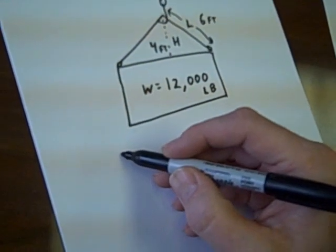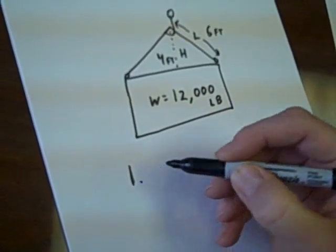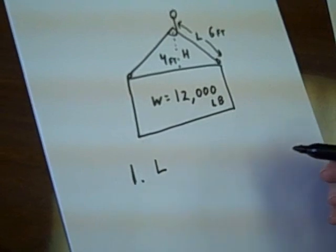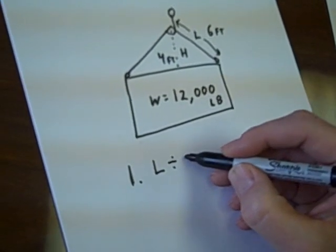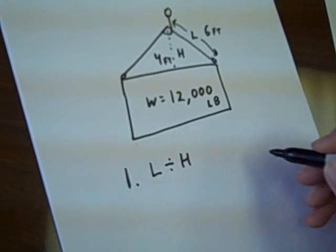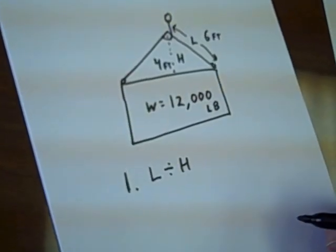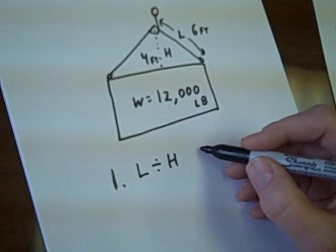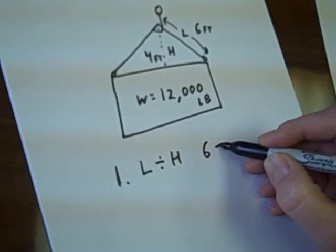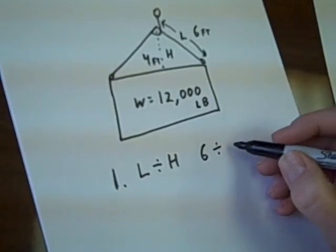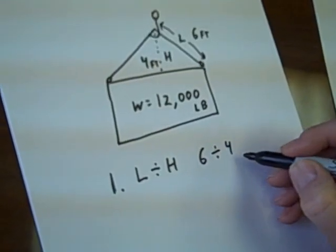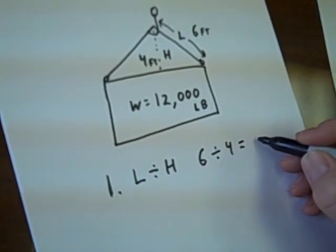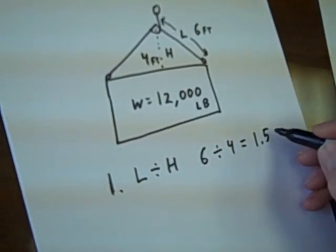So step number one was to take L, the length of the strap, divided by H, the height above the load that the hook is. So in this case we would have six divided by four, and that equals 1.5.